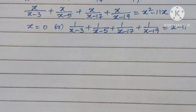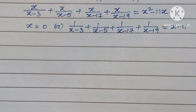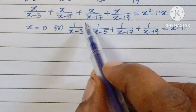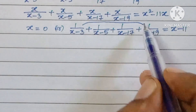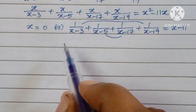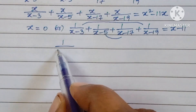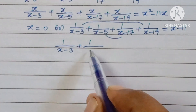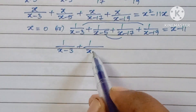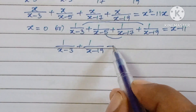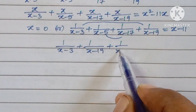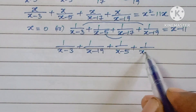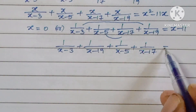Now we have one value of x. Next, we pair the terms: 1 over (x minus 3) plus 1 over (x minus 19) as one pair, and 1 over (x minus 5) plus 1 over (x minus 17) as another pair, all equal to x minus 11.